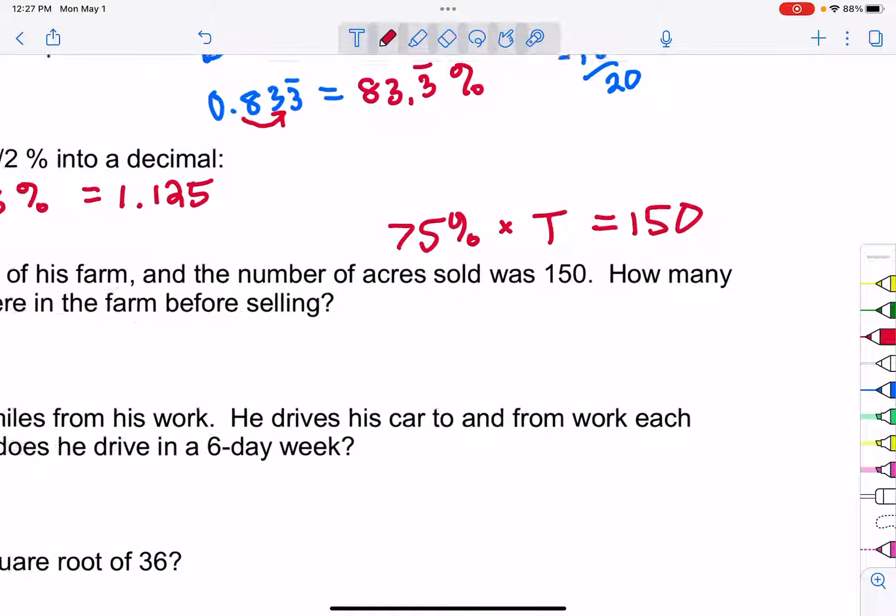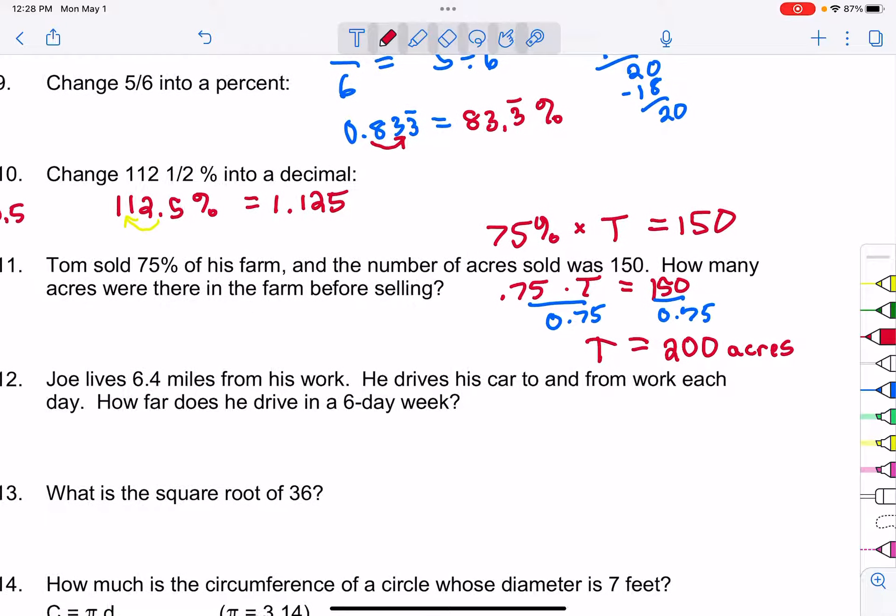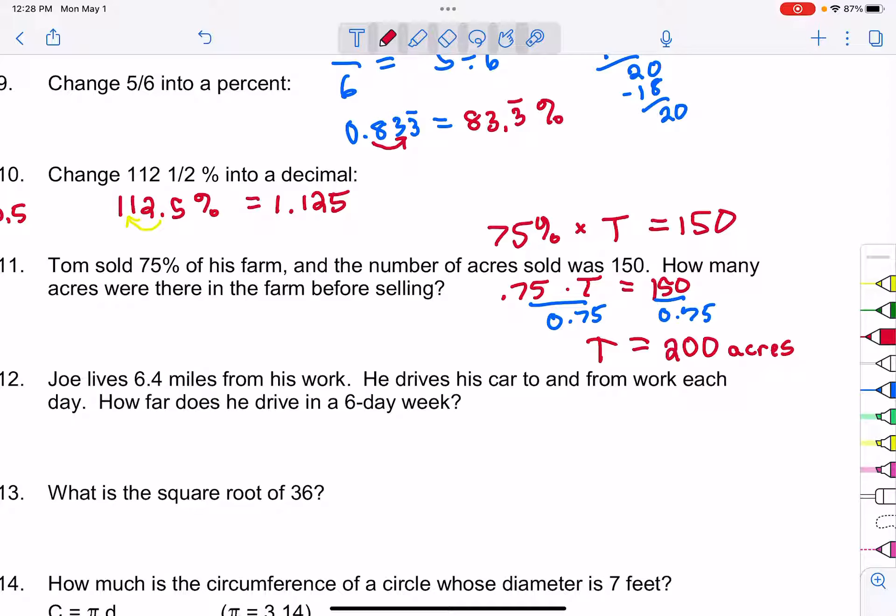How many acres were on the farm before selling? Well if we look at this math and if we want to solve it, we're just going to solve 0.75 times the total equals 150. Now in order to solve an equation like that we just have to divide off the 0.75, so we're going to divide both sides by 0.75. So the total will just be whatever 150 divided by 0.75. If we do that division we get 200. So the answer would be 200 acres. There were 200 acres on the farm, he sold 75 percent of it, and he sold 150 which is three-fourths of it.